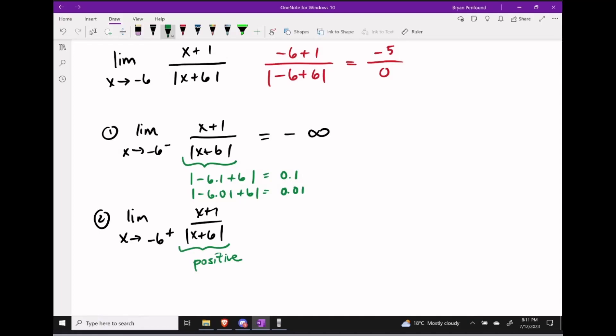Similarly, as we move into part 2 of this problem, the logic for the denominator doesn't change. As I start to choose values that are close to negative 6 but a little bit bigger than negative 6,